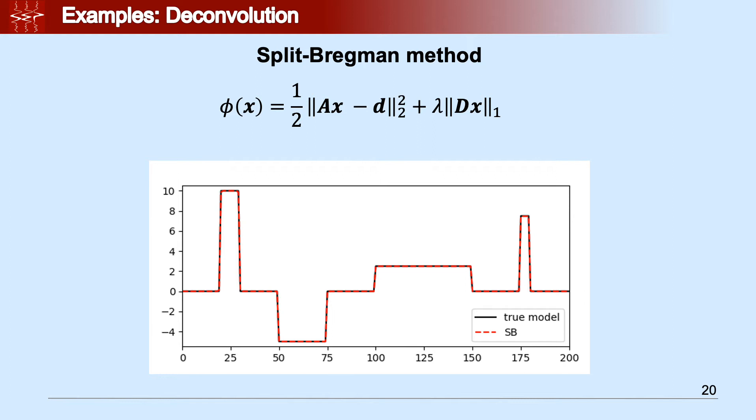So instead, in this case, we want to minimize or try to make the derivative of the signal sparse. That's the reason why in the regularization term we try to minimize the L1 norm of the derivative of the signal. If we apply the split Bregman method, you can see that we retrieve the blocky signal pretty accurately.